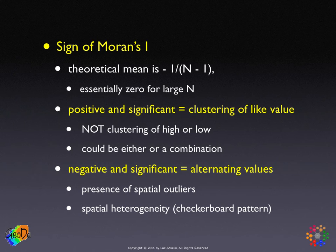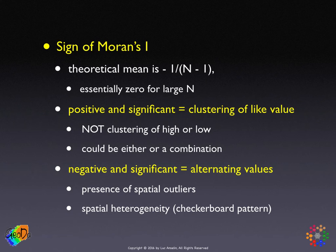This is often interpreted incorrectly, and there are actual examples in the literature where a positive and significant Moran's I is interpreted as evidence for clustering of, for example, high disease rates — which is actually not correct. The only thing one can say when finding a significant positive Moran's I is that like values tend to cluster, and this could be at the high end, the low end, or both.